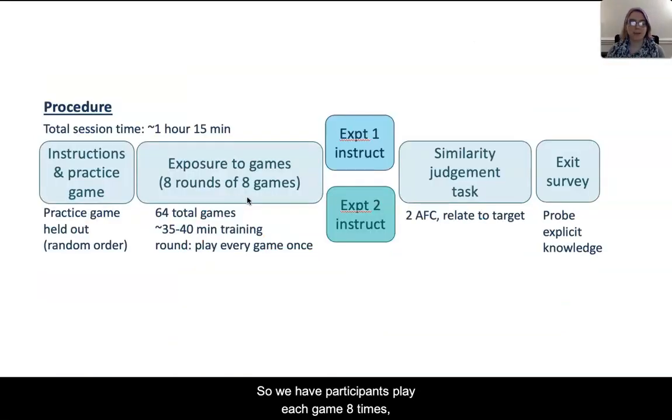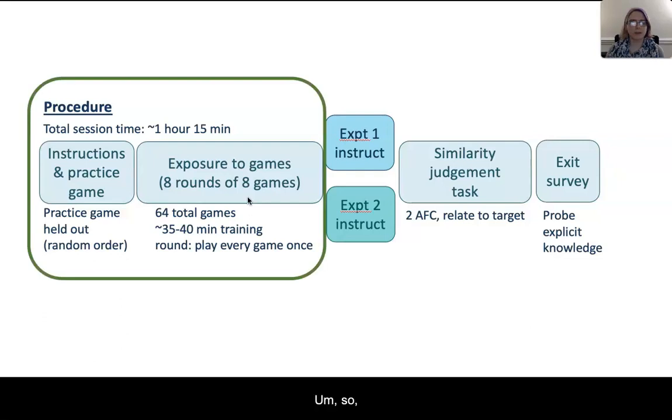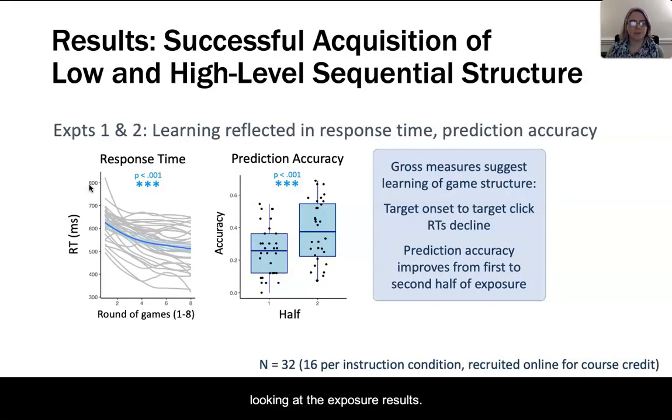We have participants play each game eight times for about 35-40 minutes of exposure and then we have them do similarity judgments of the games. So looking at the exposure results, over time people's response time decreases and their accuracy on our explicit prediction task goes up from the first to the second half of the game. That shows gross sensitivity to the game structure.